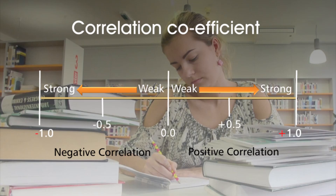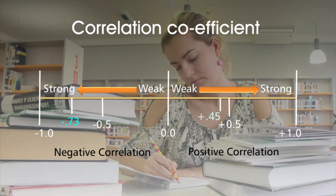The sign — plus or minus — tells you the direction of the relationship, and the number tells you its strength. The mistake students make here is to assume that negative correlations are somehow less strong or less significant than positive ones, but they're not. For example, a negative correlation of 0.73 is a stronger correlation than a positive one of 0.45. The strength of the correlation is given by the figure.